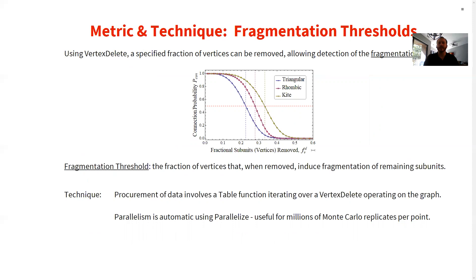To determine the fragmentation characteristics for any of these tilings, one of the most telling and experimentally detectable metrics is the fragmentation threshold — the fraction of vertices whose removal induces fragmentation of the remaining structure. Subunits are randomly removed at some fraction on the x-axis of this plot; the connection probability on the y-axis is determined through Monte Carlo. The point at which the connection probability transcends 0.5 is where the system has gone from breaking into two or fewer components to two or more components — the point at which the system is on average fragmented.